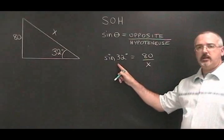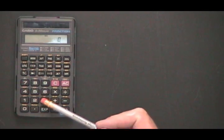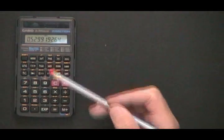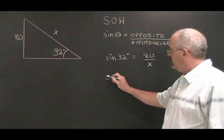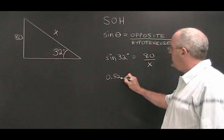What is the sine of 32 degrees? The sine of 32 degrees is equal to 0.5299. So we replace sine of 32 degrees by 0.5299.